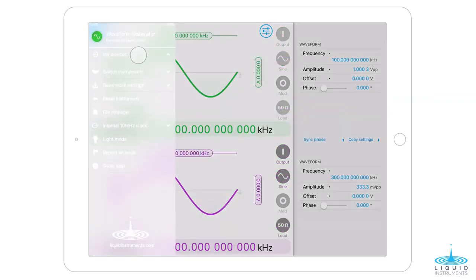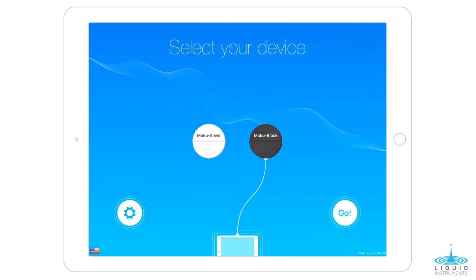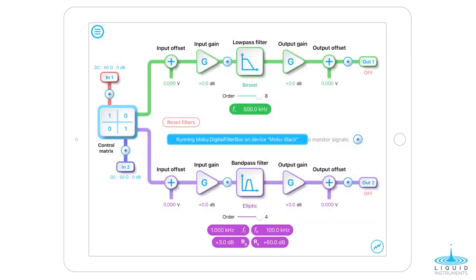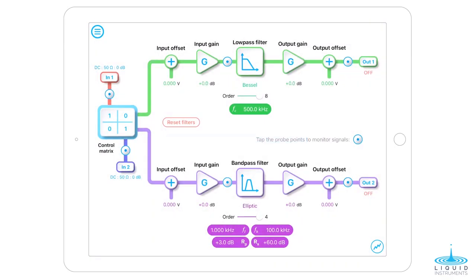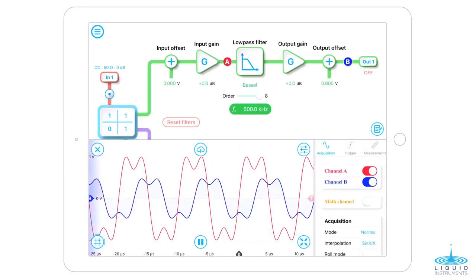Next, we connect to the black Moku and launch the digital filter box. The input control matrix adds two waveforms together and we can use the inbuilt Moku oscilloscope to examine the signals before and after filtering. Enabling the probe points before and after the 500 kHz low-pass Bessel filter, we can see we have minimal phase distortion.